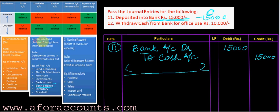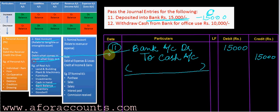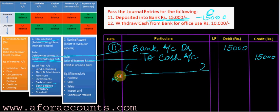You have cash in hand and bank balance — these are called real accounts. The rule is: debit what comes in, credit what goes out. In bank, you are receiving money so debit what comes in; cash has been reduced so credit what goes out. Now the 12th entry.